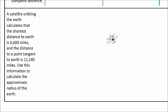Here's the question. A satellite orbiting the Earth calculates the shortest distance to Earth is 6,400 miles. The shortest distance to Earth is 6,400 miles. Let's deal with that first.